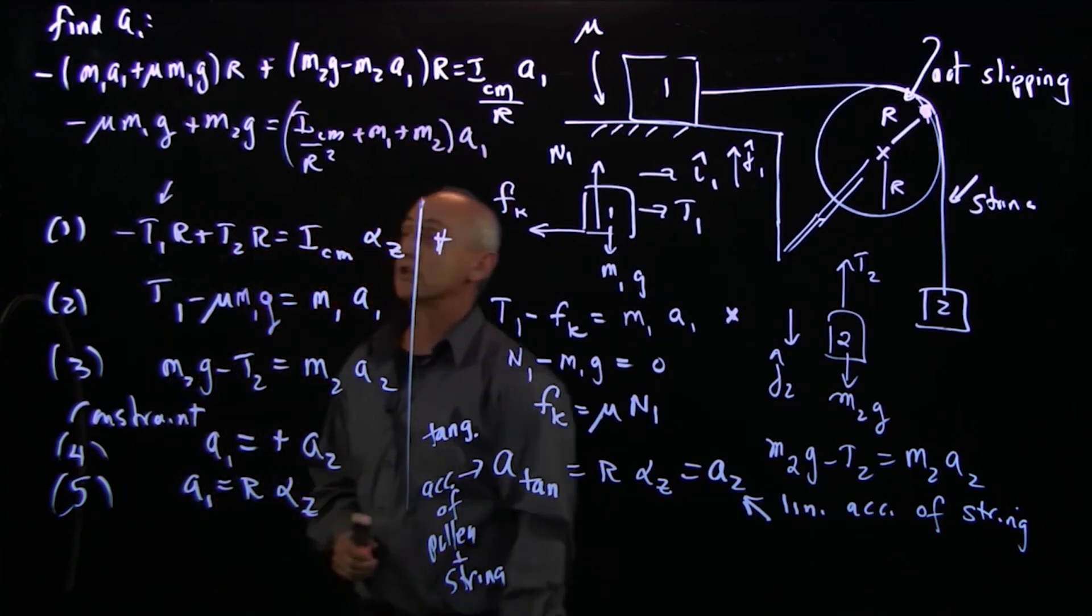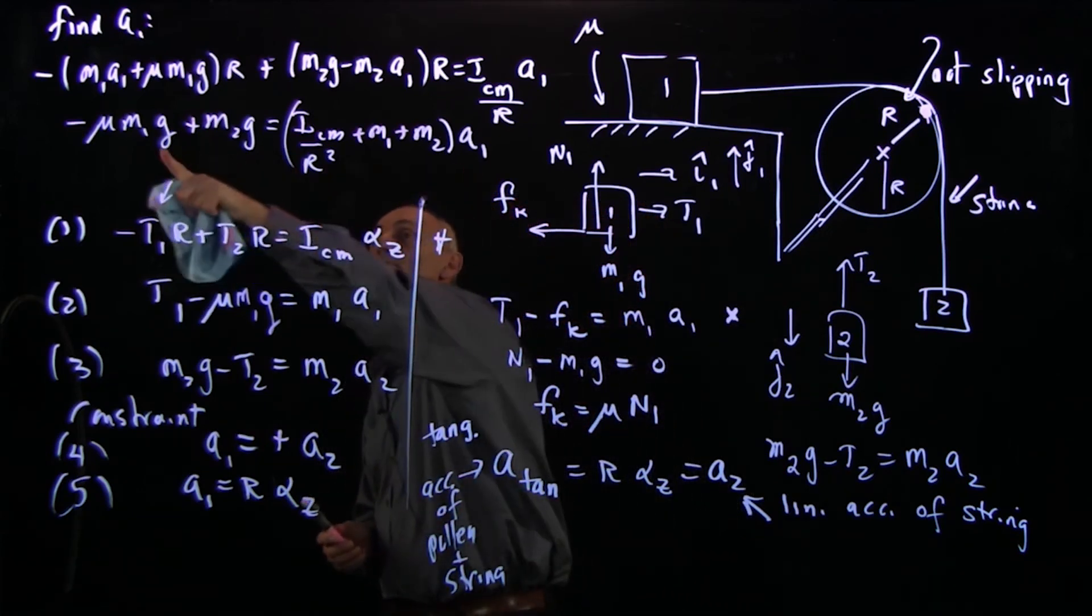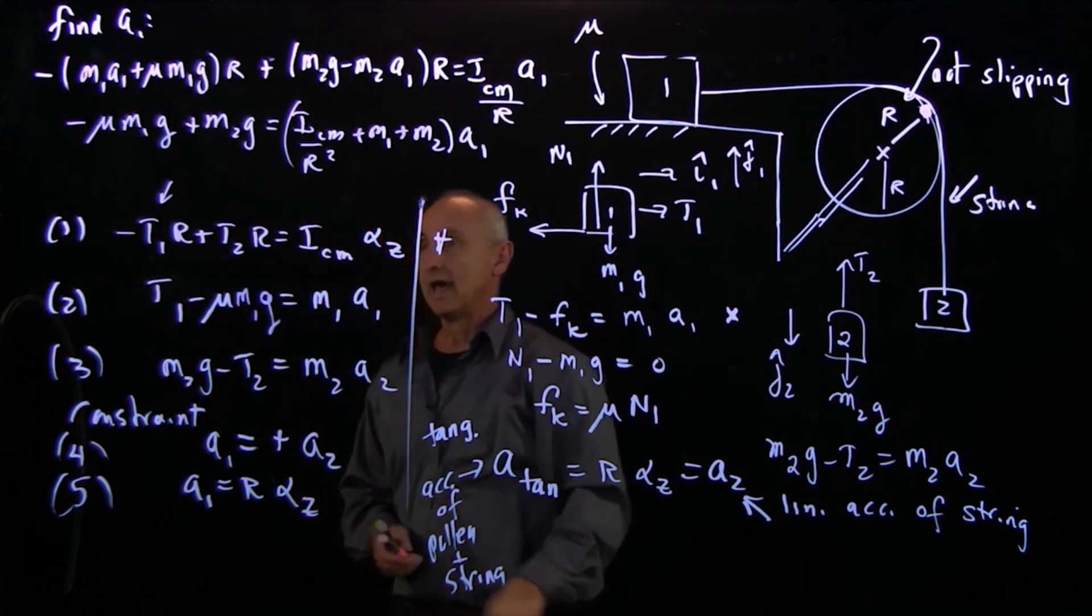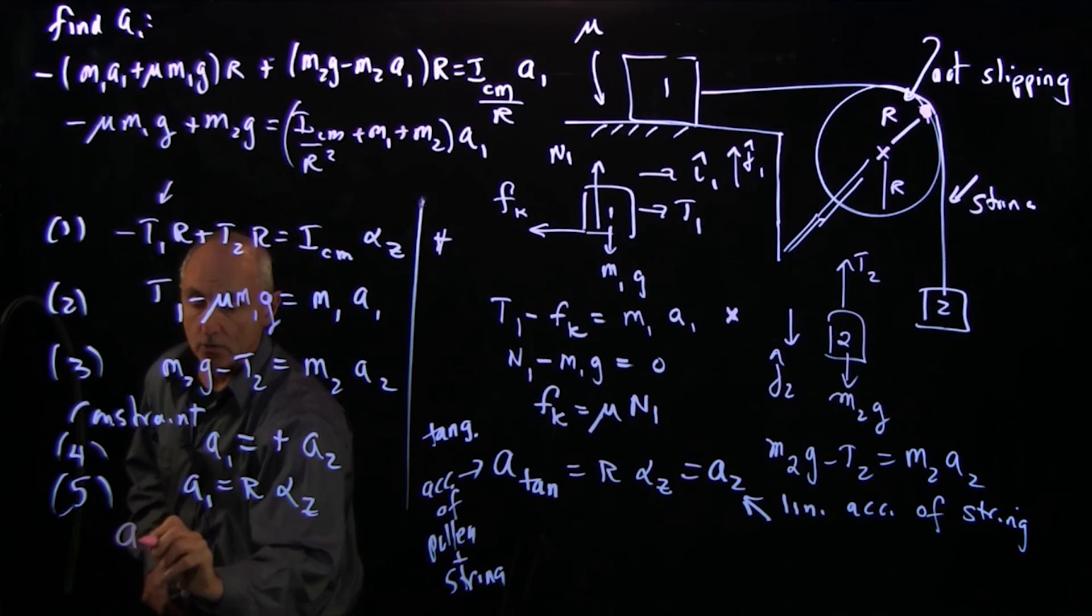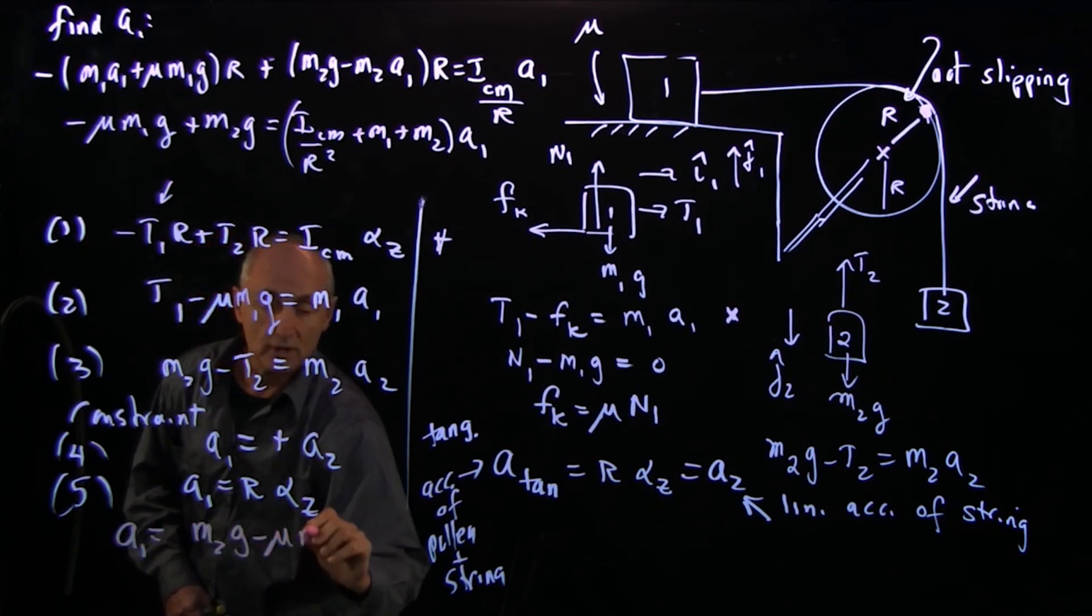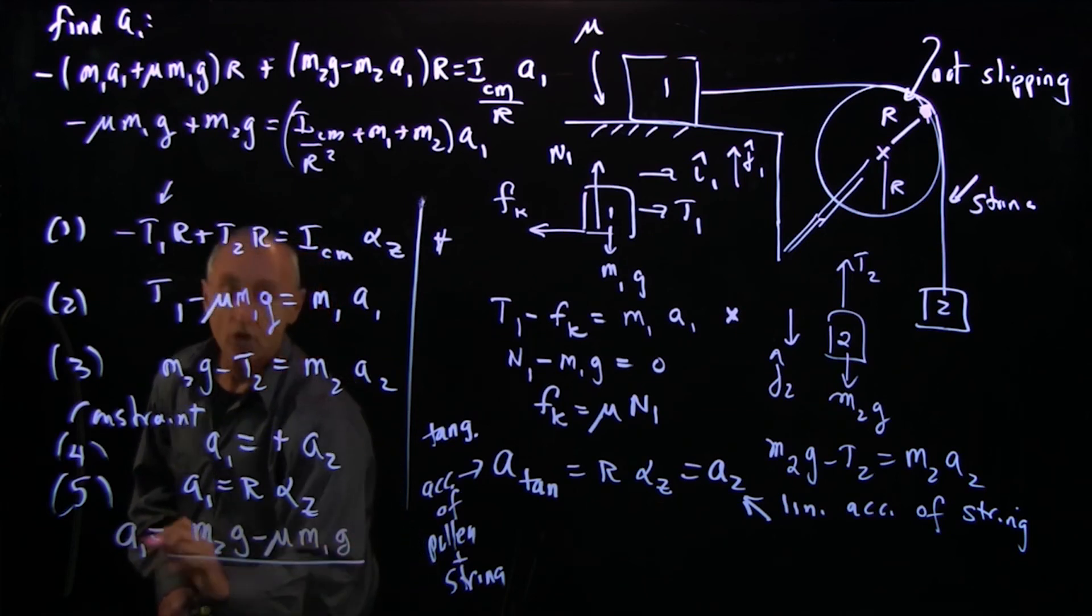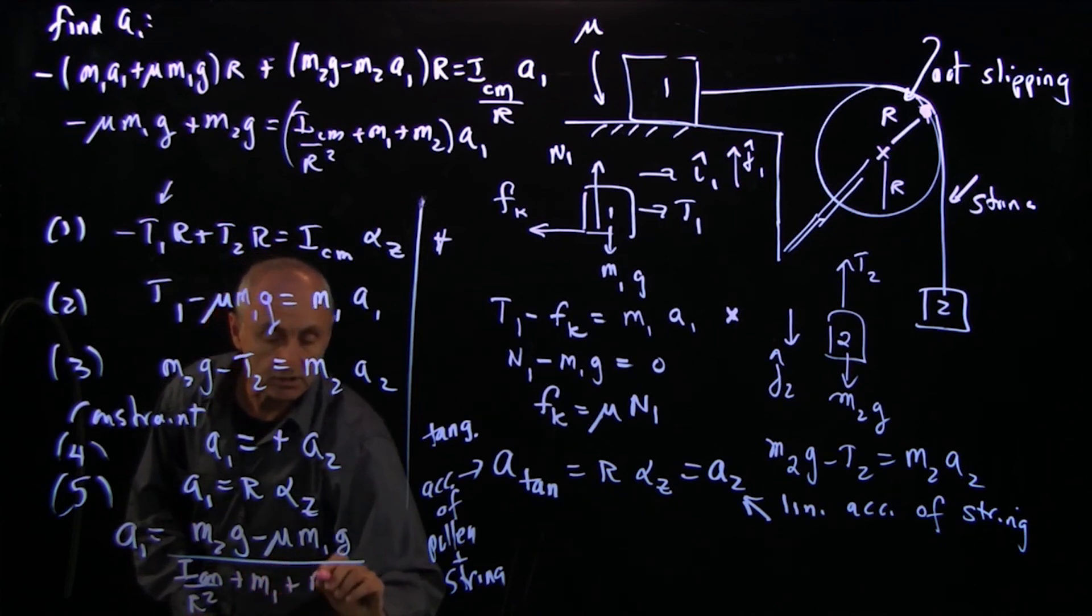I now can solve for the acceleration of my system in terms of all of these quantities. And let's just put it all the way down here at the bottom, that A1 equals M2g minus mu M1g over ICM r squared plus M1 plus M2.